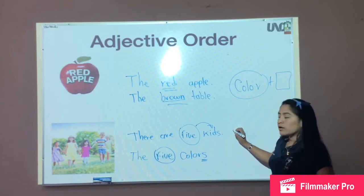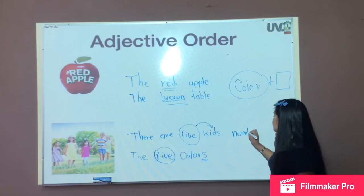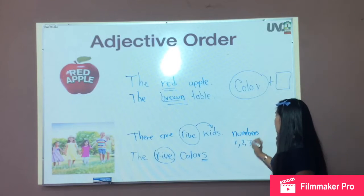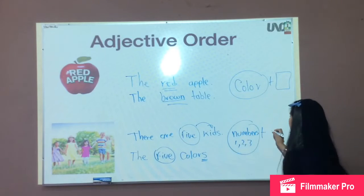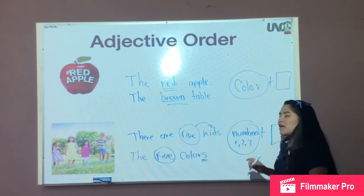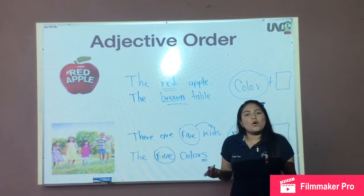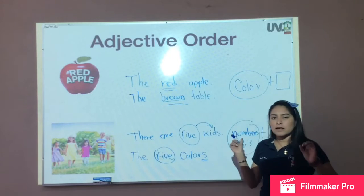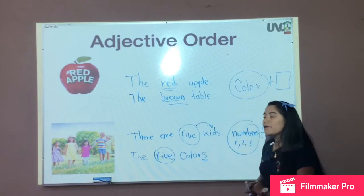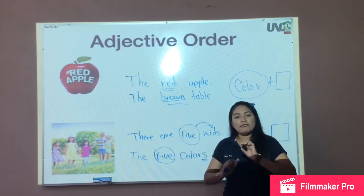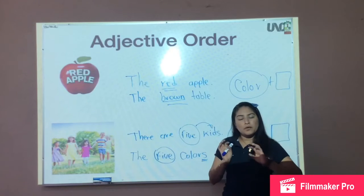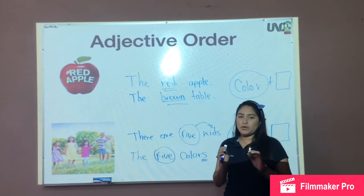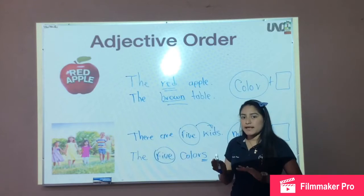We are going to talk about numbers: one, two, three, and then we are going to write the object — kids, color, chairs, or something like that. If you have doubts or questions, write in the forum for questions and doubts.